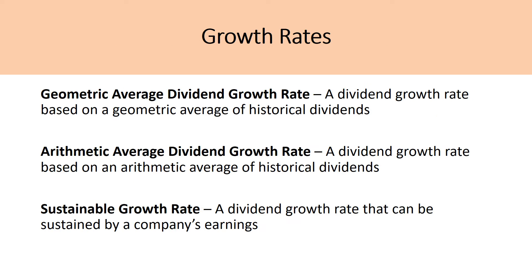To quickly define these growth rates: the main difference between the geometric and the arithmetic average dividend growth rates is the way the averages are calculated. For the geometric, the geometric average formula is used, and for the arithmetic, the arithmetic average formula is used.